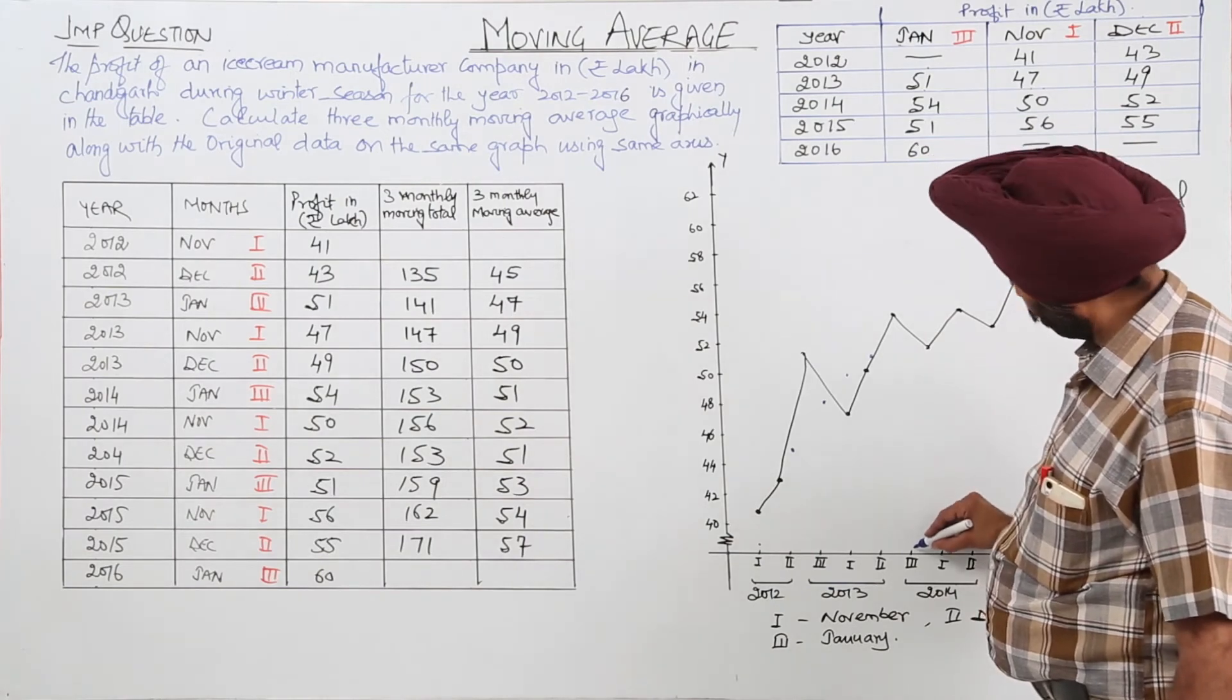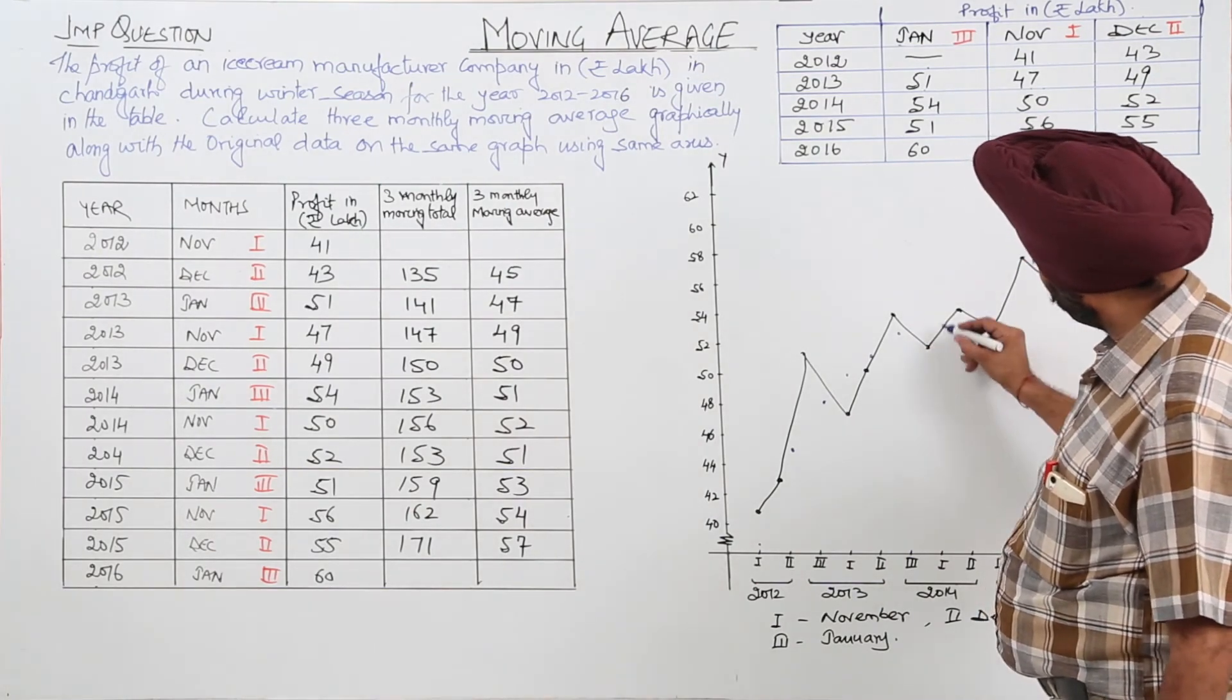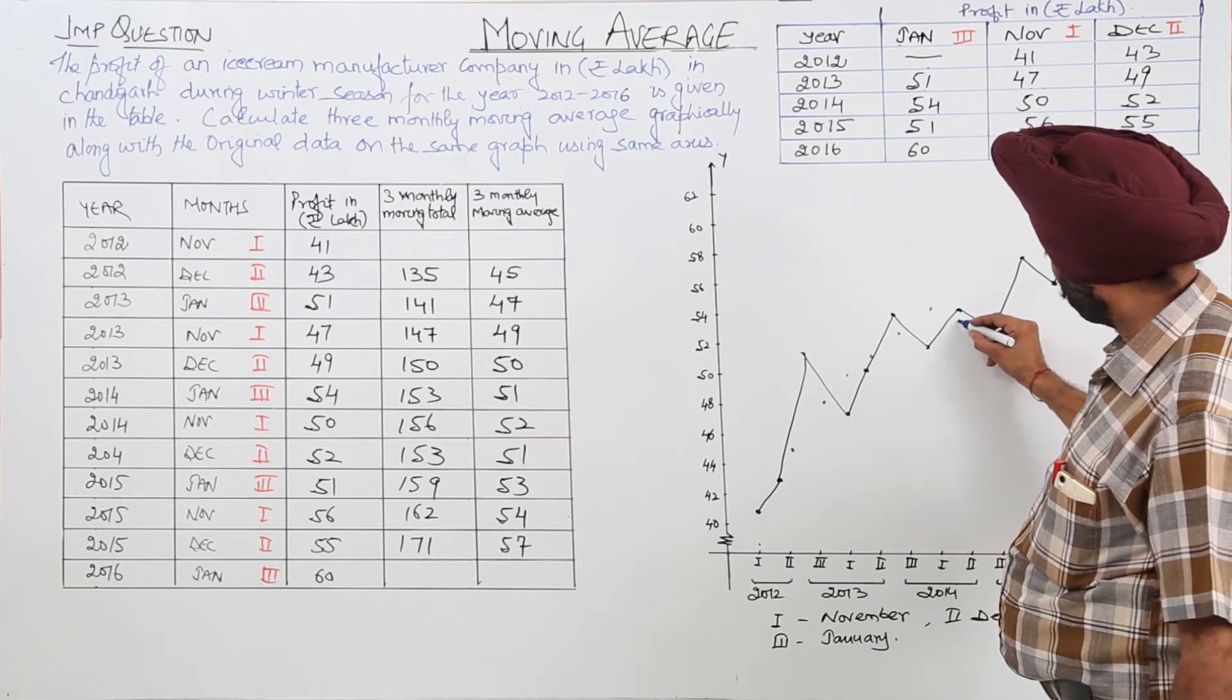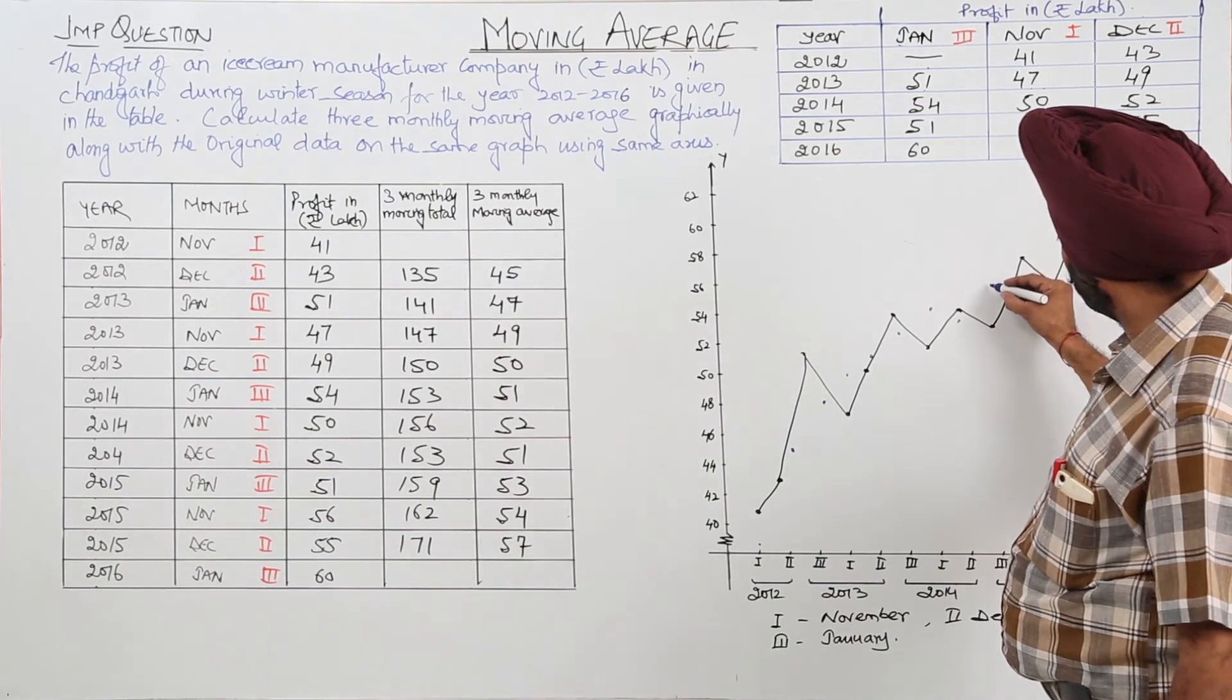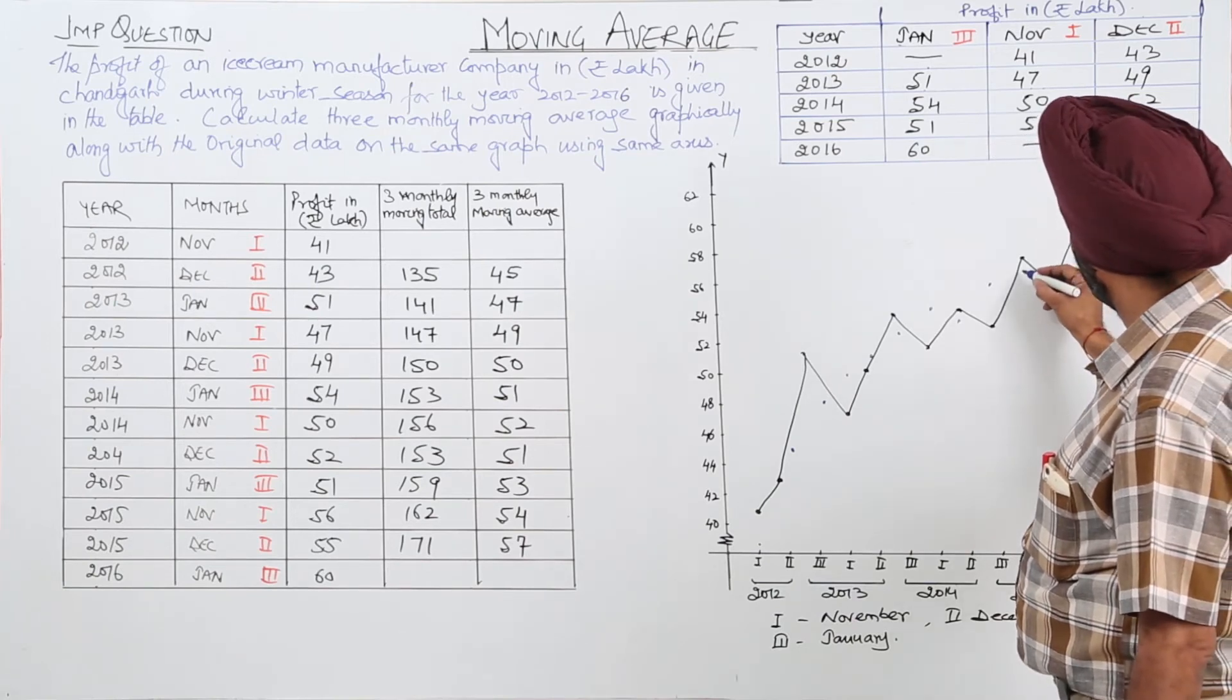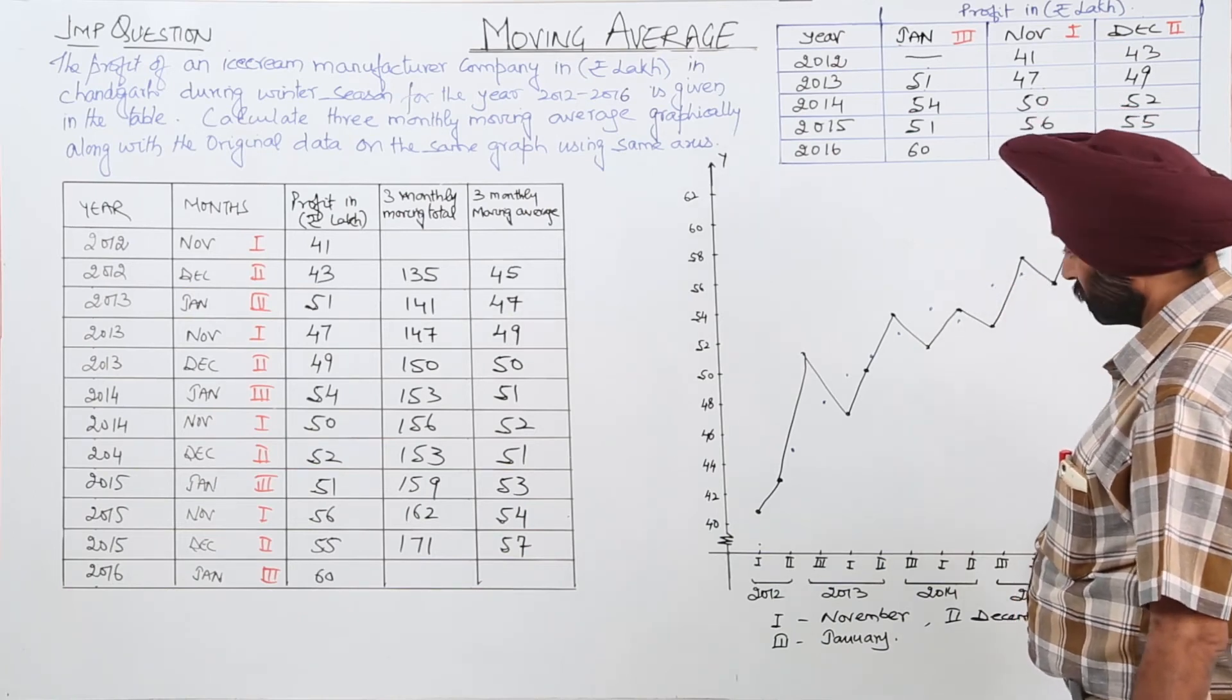For third, 51. 51, 52, again 51. Then 53, then 53, then came first 54, and 57.